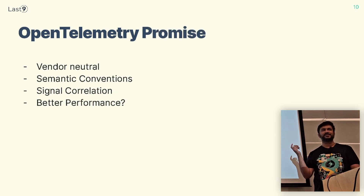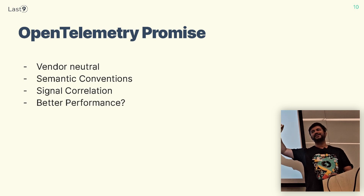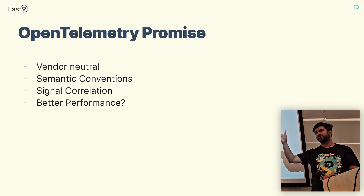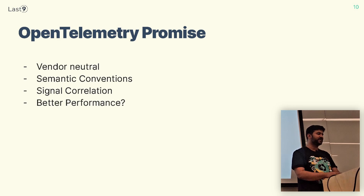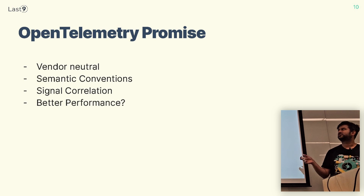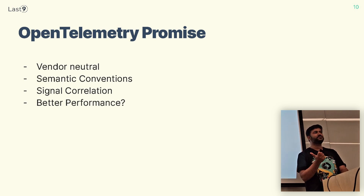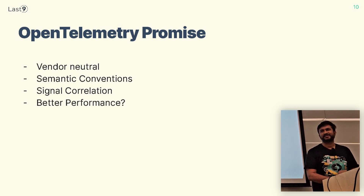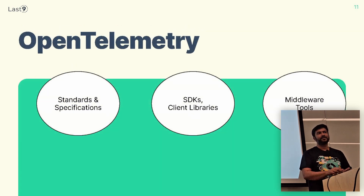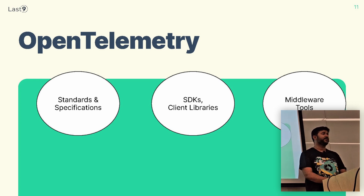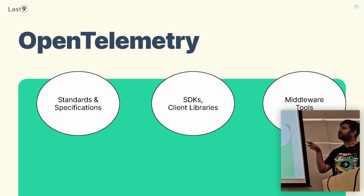Because OpenTelemetry doesn't care where you're storing the data, as long as that destination understands the OTLP protocol, you can use Datadog, New Relic, Levitate, or any new software that can store that data. Semantic conventions allow signal correlation between logs, metrics, and traces. It also tries to remove performance bottlenecks that existing systems have, with design goals specifically around making sure that the performance of data collection, pre-processing, and exporting meets expected levels.